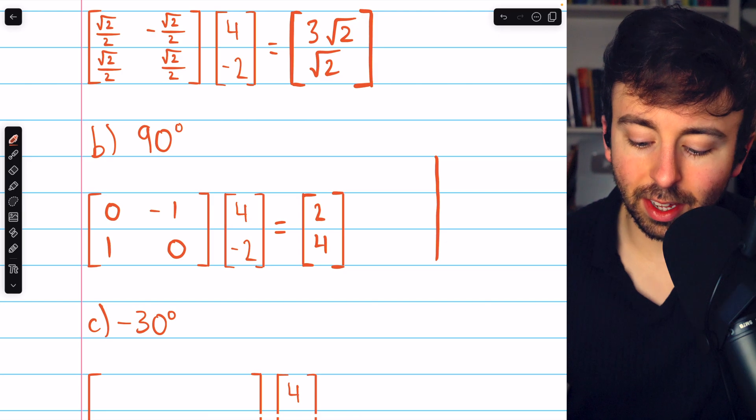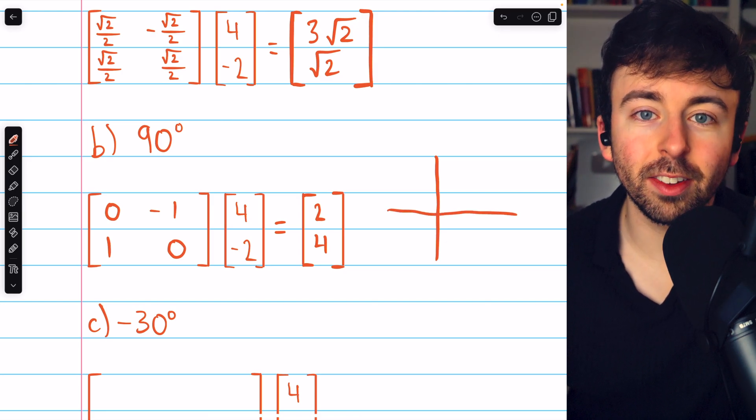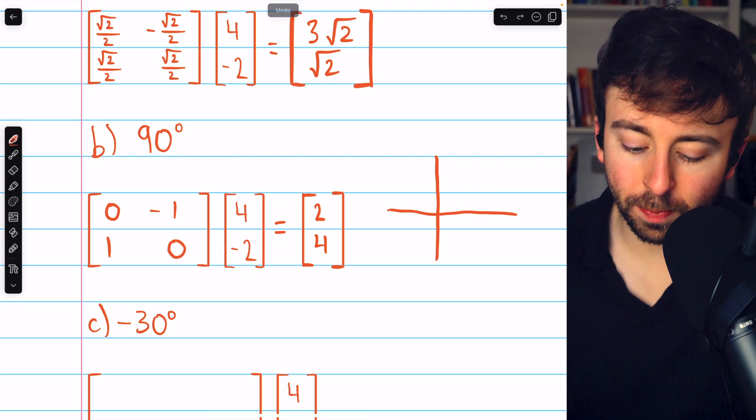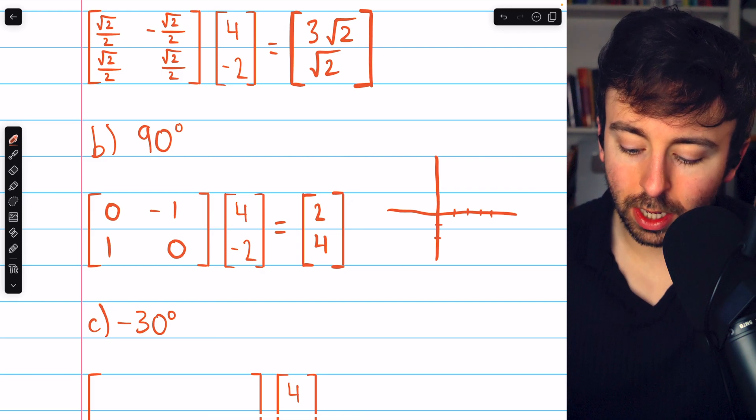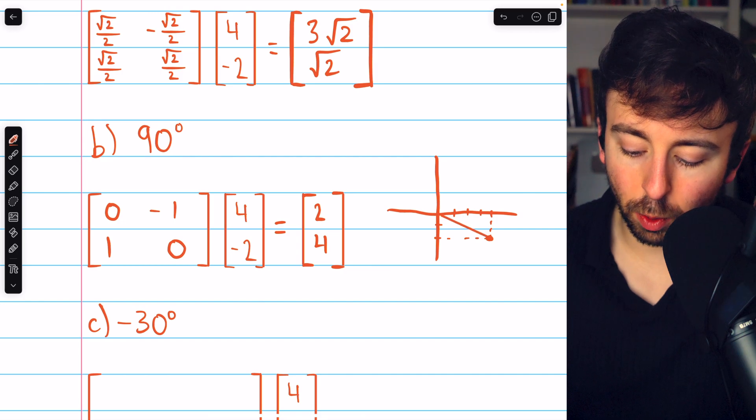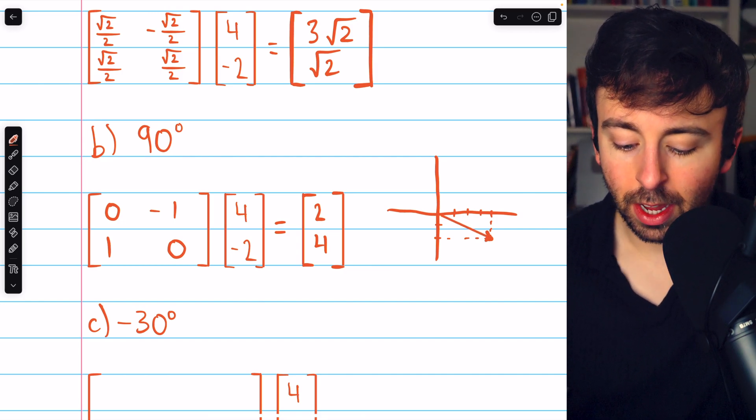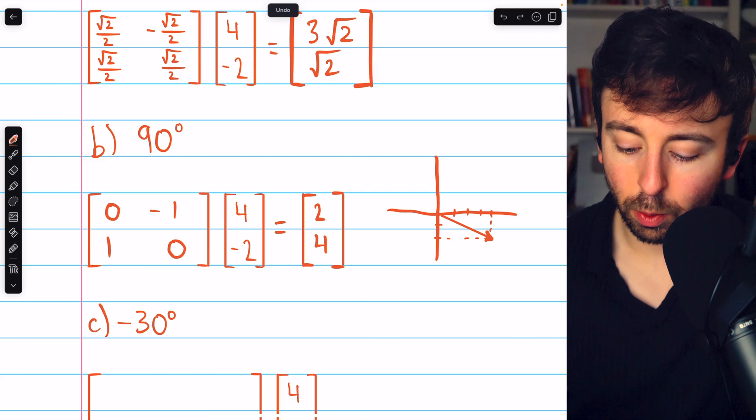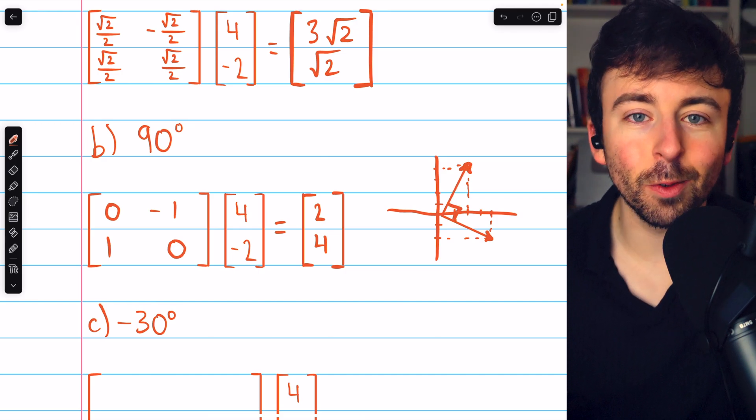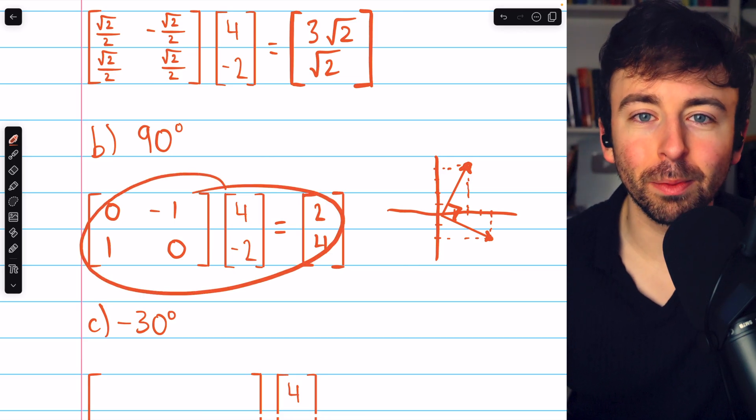Since these are integers, this is a good time to sketch this out, and you can see the 90 degree rotation in action. (4, -2), let's see, that's 1, 2, 3, 4, down 2. That's the vector that looks like this. A 90 degree rotation about the origin gets us to (2, 4), which is 1, 2, 3, 4, the vector going up here. That appears to be a 90 degree rotation, which we figured out using matrix multiplication.